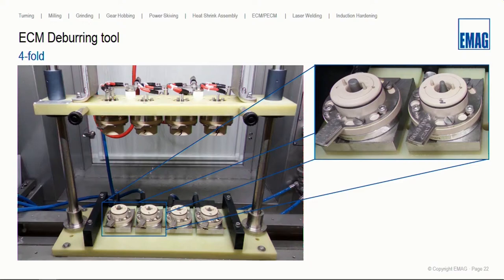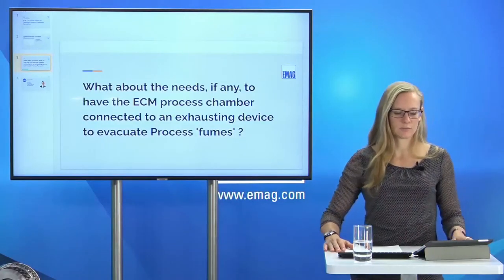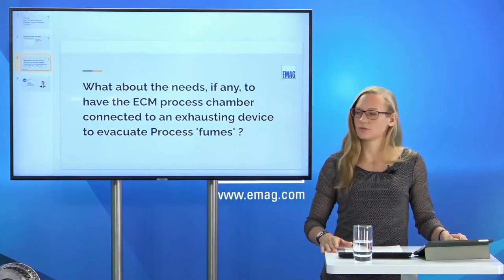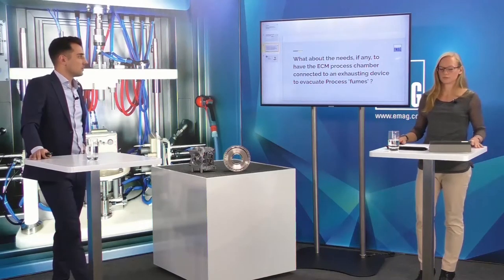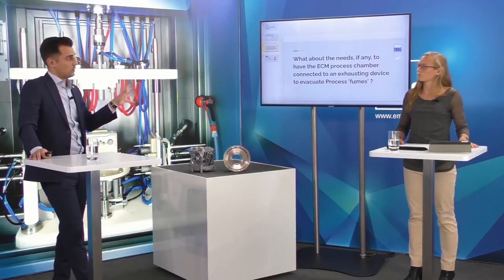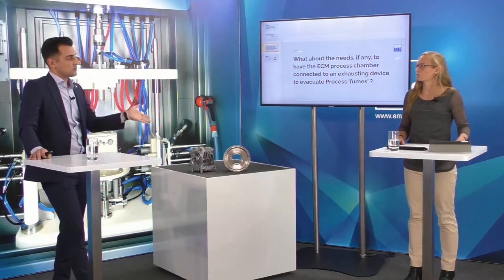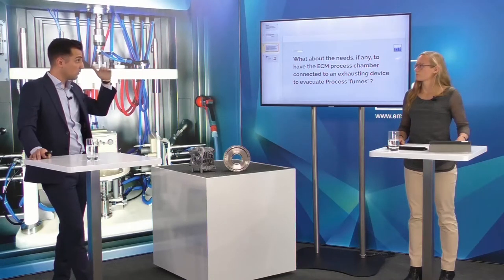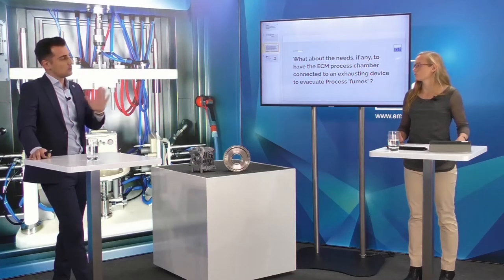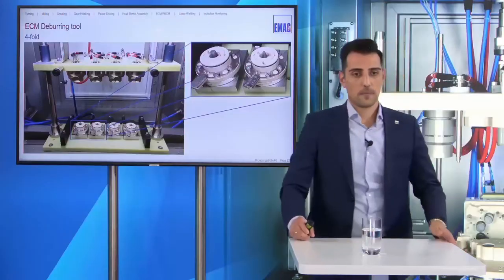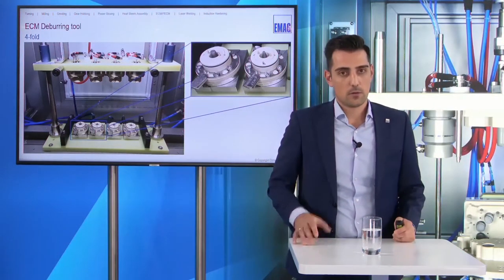One more question from the audience: is it necessary to have the ECM process chamber connected to an exhausting device to evacuate process fumes? Yes, it is necessary. But as I answered before, we can directly connect to the filtration system from the customer's facility. The fumes are extracted in the working area and the air is filtered out. It is flexible — in some cases based on available height — so it is not a must-have; it is up to the customer's requirements.